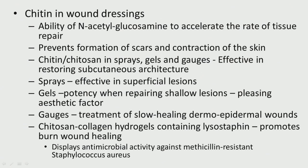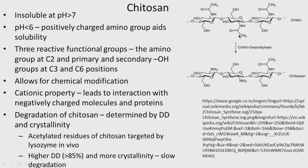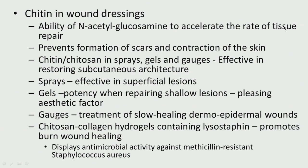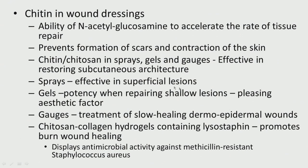Chitin is also used in wound dressing — the ability of N-acetyl glucosamine to accelerate the rate of tissue repair, prevent formation of scars, and prevent contraction of the skin. Chitin and chitosan are used in sprays, gels, and gauze, and are effective in restoring subcutaneous architecture. Spray is effective in superficial lesions; gels are used for repairing shallow lesions with pleasing aesthetics. Many of these advantages are surface-related — used as sprays, for scars, tissue repair, aesthetic factors, slow healing dermal and epidermal wounds, hydrogels, and burn wound healing. All these are surface applications.